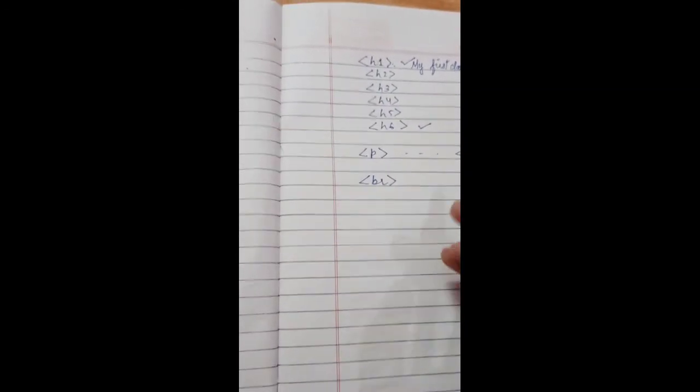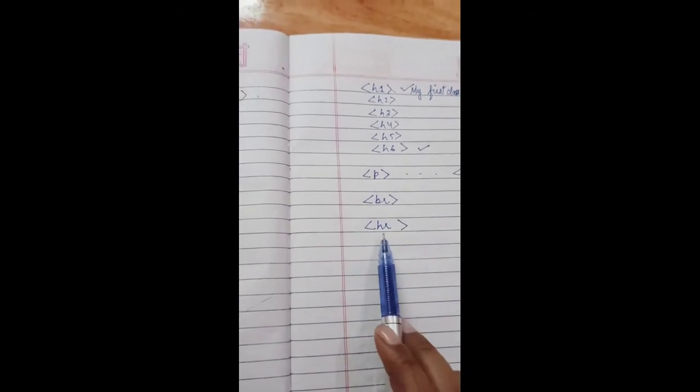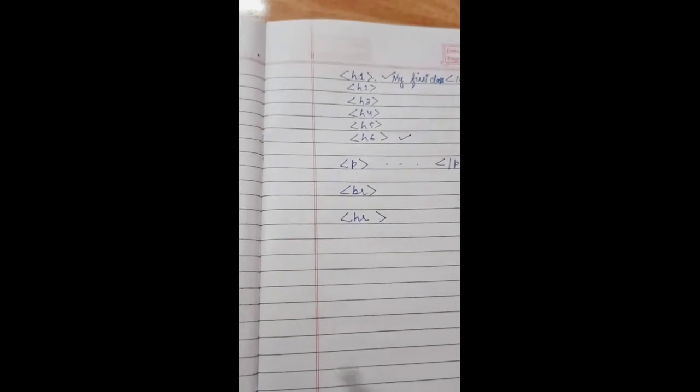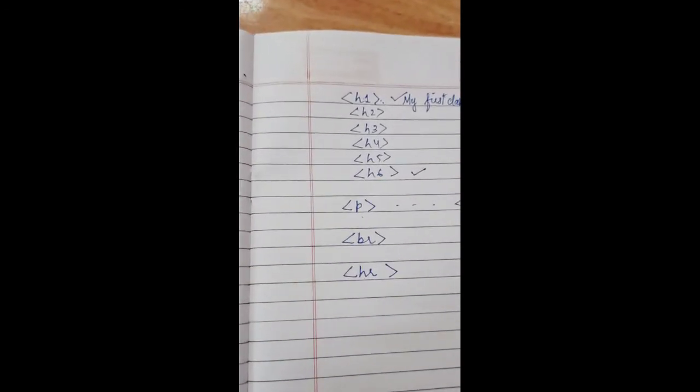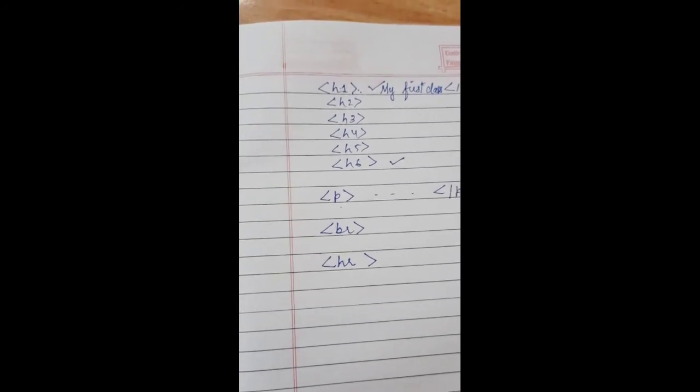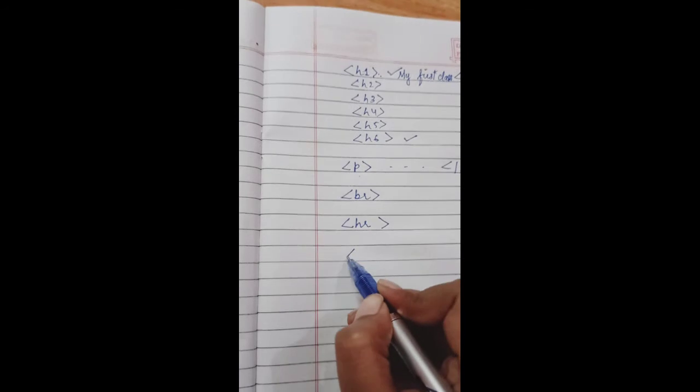Then there is another tag, that is horizontal ruler tag. It is written as small HR. It is used to draw horizontal line between two paragraphs. It divides the webpage into different sections.